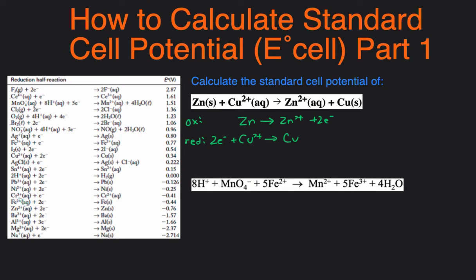And you can see that Zn is over here. But you can see that this is a reduction reaction because the electrons are on the left-hand side. So that means we flip the reaction, and when we flip the reaction, the voltage flips. So that means the voltage for this is 0.76 volts instead of negative 0.76 volts.